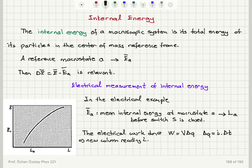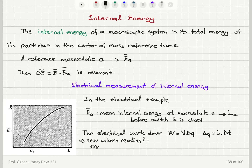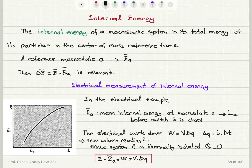By repeating this for different values of delta t we can find how mean energy varies with the thermometer column length L. Since system A is thermally isolated — this is an adiabatic interaction with no heat flowing in or out — the change in mean energy relative to macrostate A equals the work done on the system, which is V times delta Q.